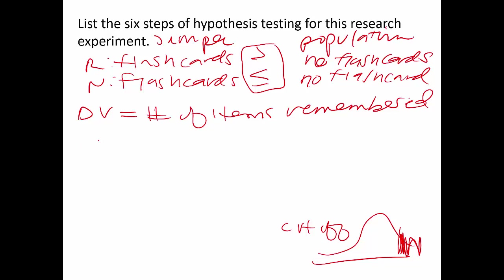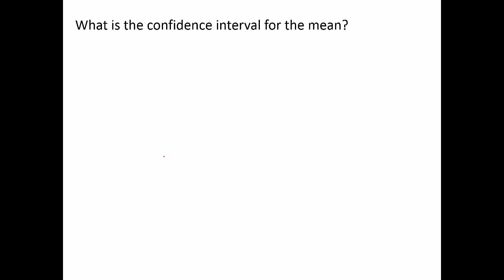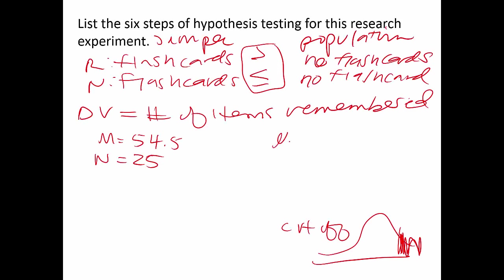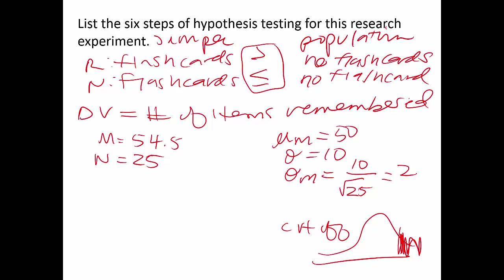Step three: list all the numbers you have. Sample mean = 54.5, n = 25, population mean (μ) = 50, standard deviation (σ) = 10. But I need the standard error: σ/√n = 10/√25 = 2. For the cutoff score it's positive and one-tailed. With p < .05 that makes Z critical = 1.64.